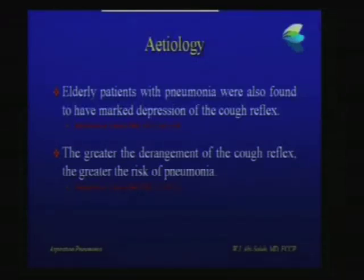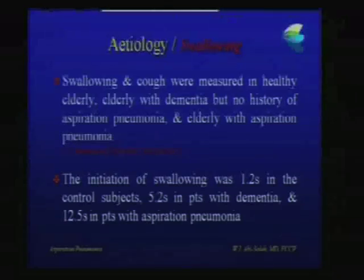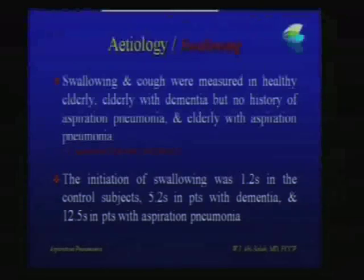Elderly patients with pneumonia are quite commonly found to have a markedly depressed cough reflex, and the greater this derangement, the greater the risk of pneumonia. Researchers measured swallowing in healthy elderly, elderly with dementia but no history of pneumonia, and elderly with aspiration pneumonia, using a thin tube through the nose to drip water and time swallowing onset. It was 1.2 seconds in controls, 5.2 seconds in those with pneumonia, and delayed up to 12 seconds in those with aspiration pneumonia — almost 10 to 12 times longer.